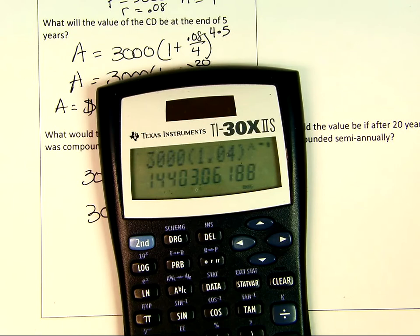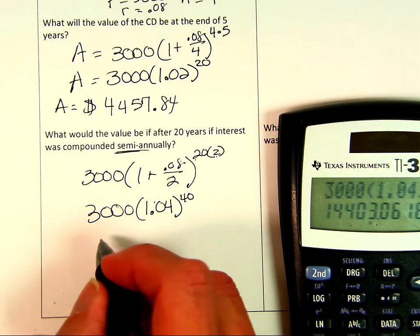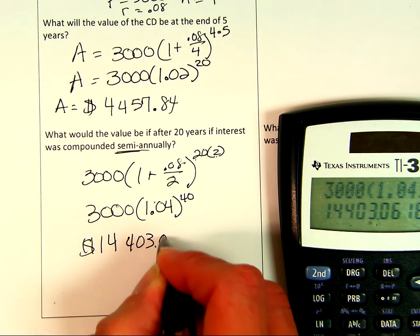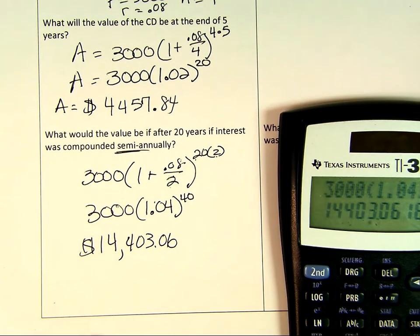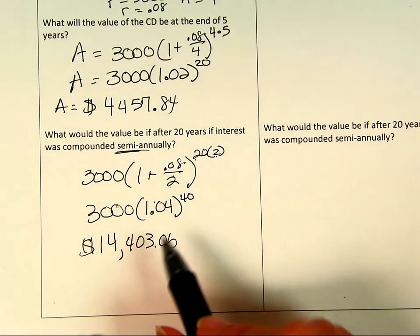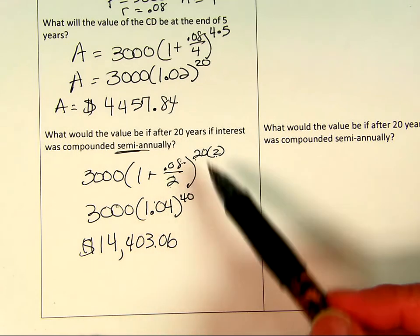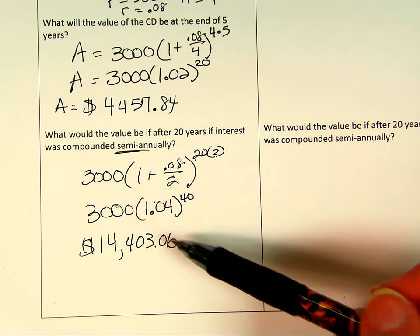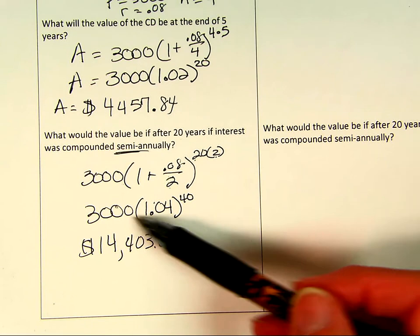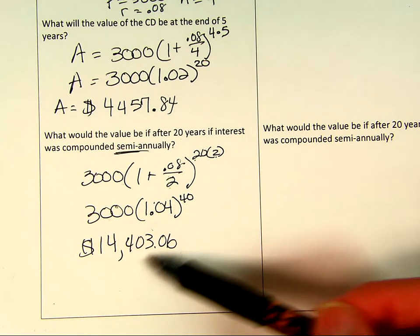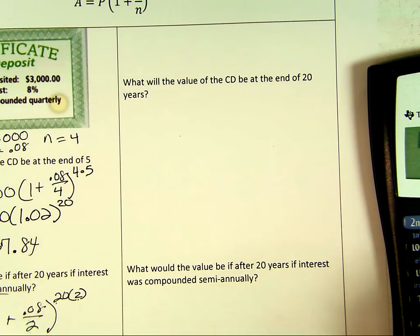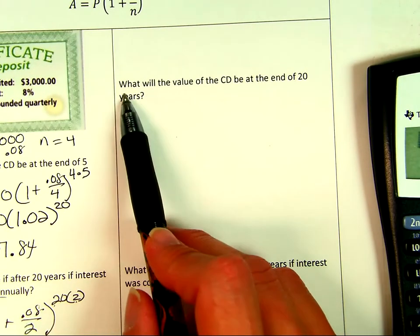After 20 years, it looks like we have $14,403.06. So 20 years is a long time, but sometimes people will buy certificates of deposit when a child is born, and when they go to college or when they get old enough, they can check that out and make a significant little amount there. The longer you have money in a CD, usually the rate is better. We're not here to talk about banking, just how to do these problems.